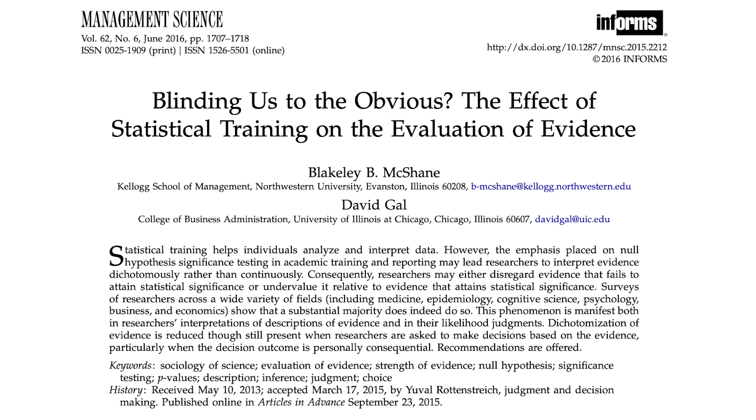So the way students are taught statistics is fundamentally different from the way that experts think of statistics. Doesn't that suggest there's a problem? Why aren't we teaching students to think like experts? Finally, there is evidence that statistical training actually makes people worse at making important decisions. One paper showed that people trained in statistics tend to see the world in black and white. But without the standard statistical training, people view things with much more uncertainty, which is how they should view it. So the curriculum needs to change — it is a horrible abomination to the field of science. With my statistics methodology, I am proposing radical changes, though I never thought they were radical. I thought it was obvious, until I started talking to other people and they said I was crazy. Well, I'm owning it.